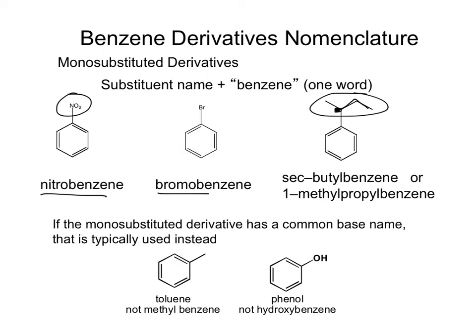If the monosubstituted derivative comes off of the list you need to memorize, then just use its name. For example, a methyl group on benzene wouldn't be called methylbenzene — you would want to call it toluene. Likewise, if there's an OH on there, it's not hydroxybenzene but phenol, since those are very accepted common names.